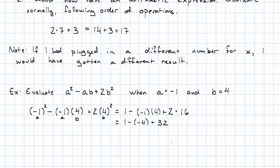And now addition and subtraction from left to right. 1 minus negative 4 is positive 5. 5 plus 32 is 37. Our final answer is 37.